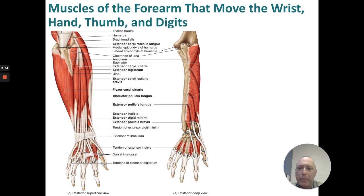Continuing with the forearm: extensor carpi radialis longus, extensor carpi ulnaris, extensor digitorum, extensor carpi radialis brevis, flexor carpi ulnaris, abductor pollicis longus, extensor pollicis longus, extensor indicis, extensor digiti minimi, and extensor pollicis brevis.